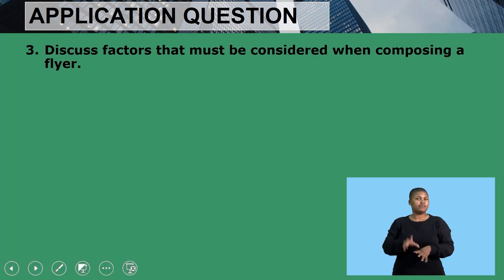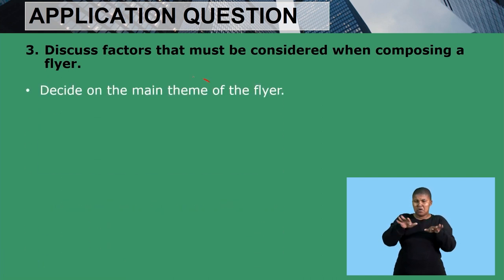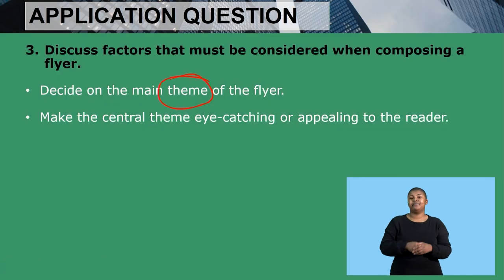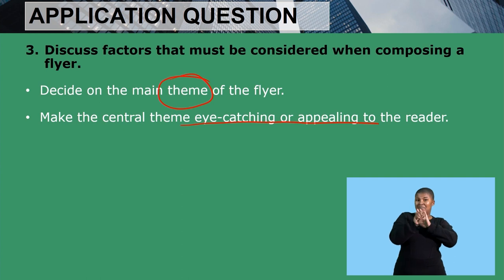Now for the third question: discuss factors that must be considered when composing a flyer. First, you need to decide on the main theme of the flyer — the main subject. Make the central theme eye-catching or appealing to the reader, so that the reader is attracted to continue reading the flyer.